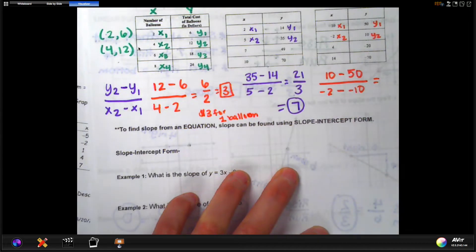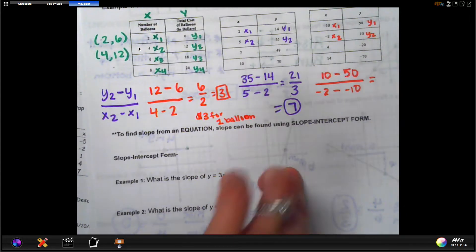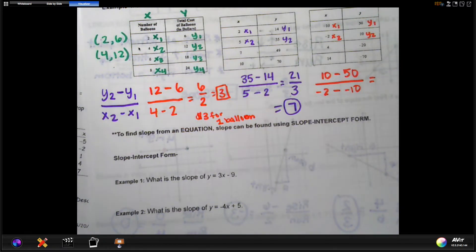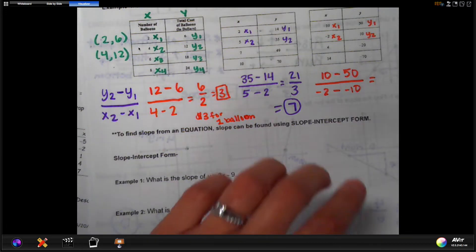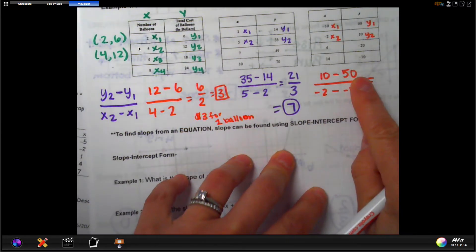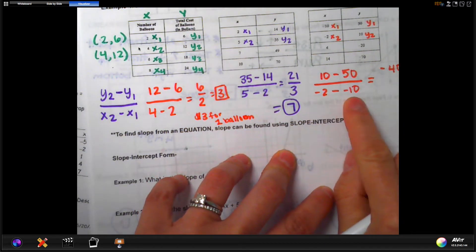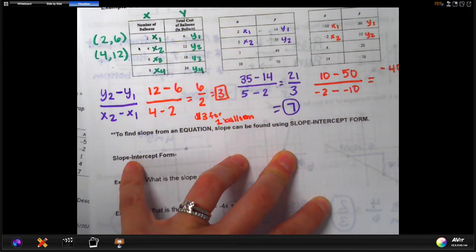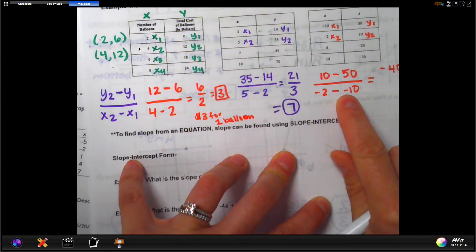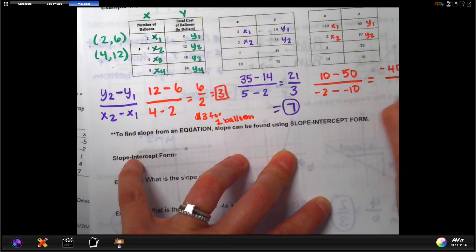Bottom would be x2 would be negative 2 minus x1 would be negative 10. I know it looks weird, but you're going to have to trust your calculator or trust your knowledge of integers from last year, from 7th grade, and realize that 10 minus 50 is going to give you a negative 40. And also at the bottom, now, if you remember this, minus negative actually cancels out and makes that a plus. So negative 2 minus negative 10 is actually going to be positive 8.